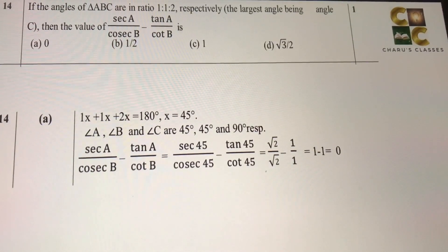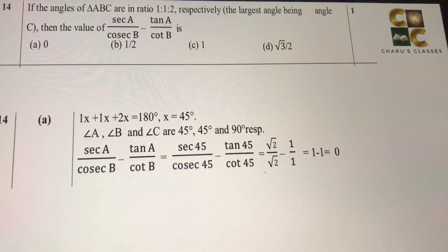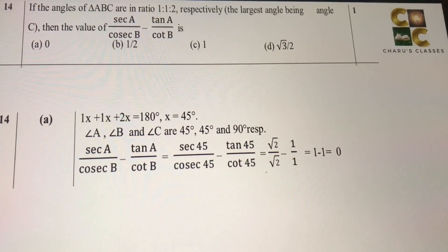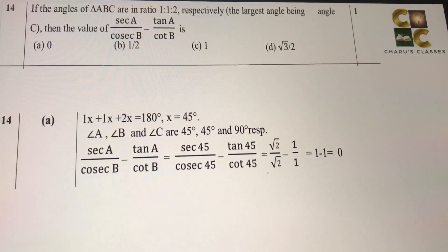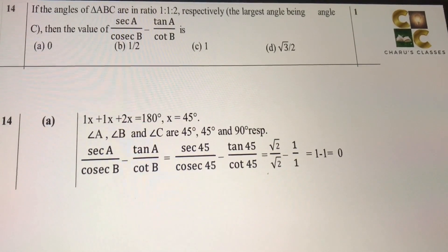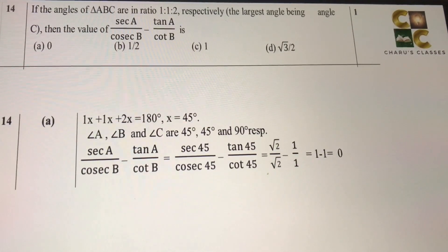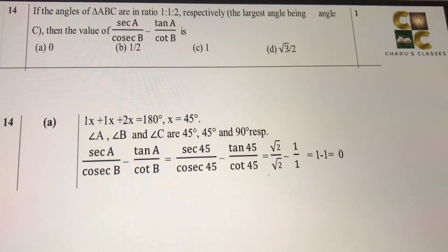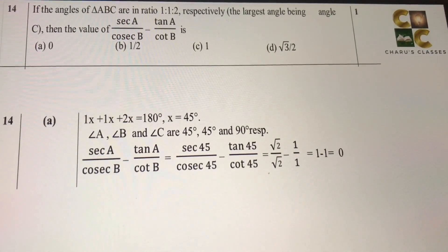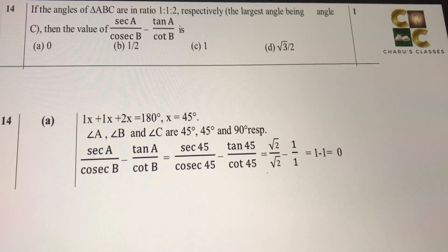If the angles of triangle ABC are in the ratio 1 to 1 to 2, then whenever they give the ratio like this, we assume x, x and 2x, according to the ratio. The larger angle is C, then the value of secant A by cosec B minus tan A by cot B is. So in this, when we solve using the angle sum property, x + x + 2x = 180, that gives us x as 45, so our angles A and B are coming as 45, and C is coming 2 times that, that is 90 degrees.